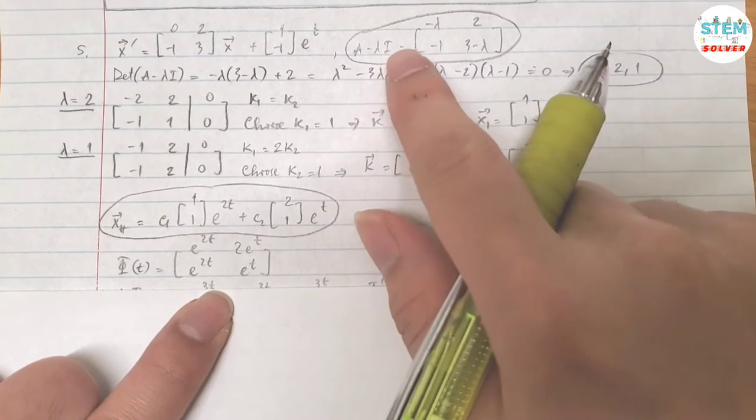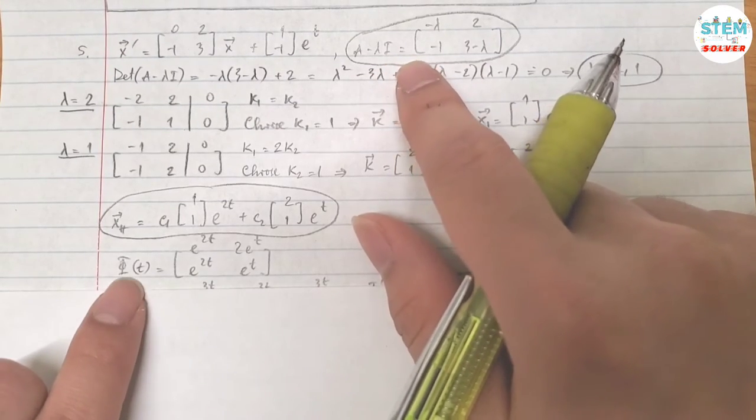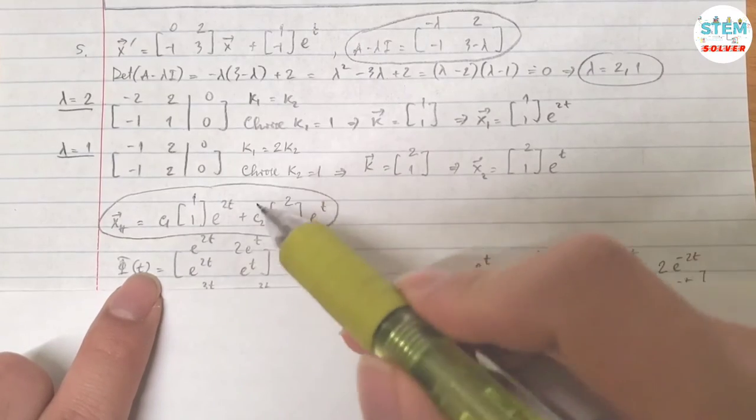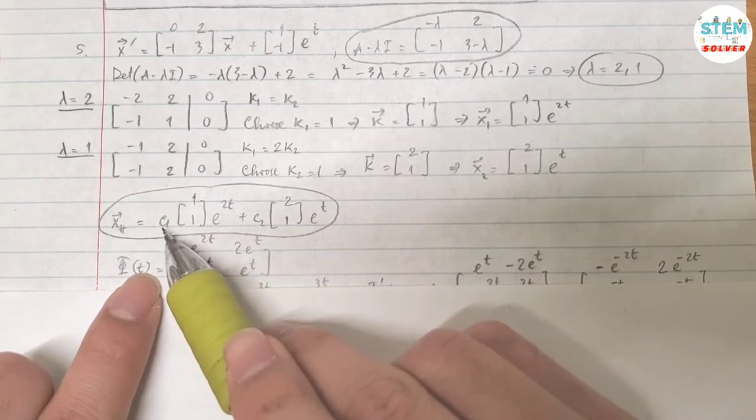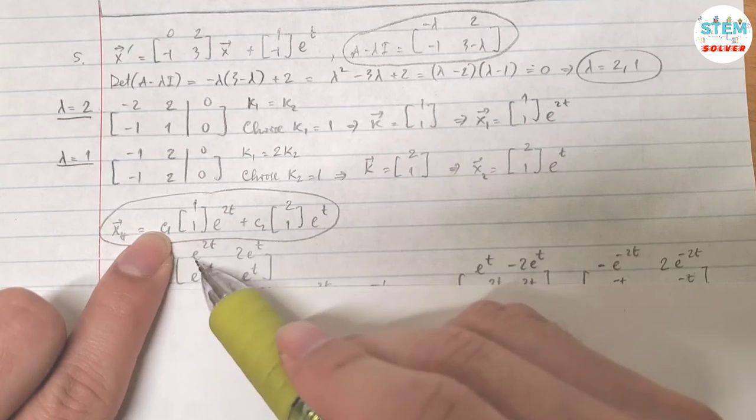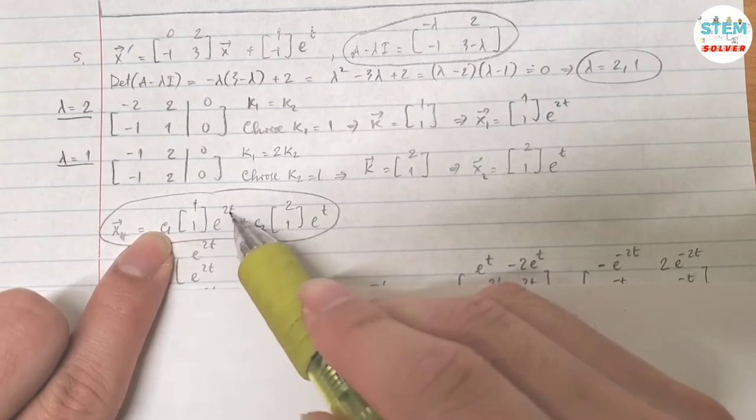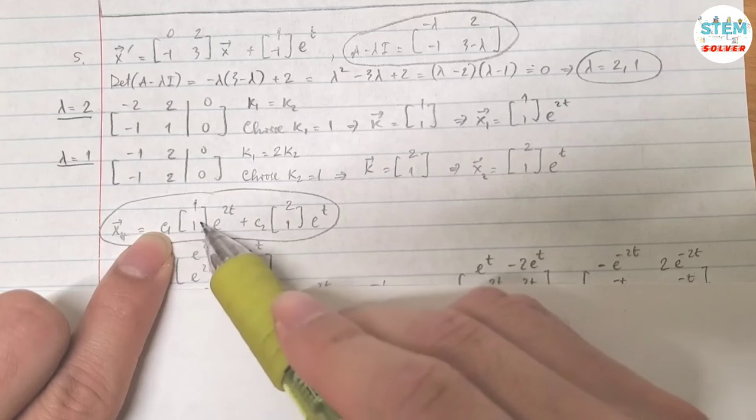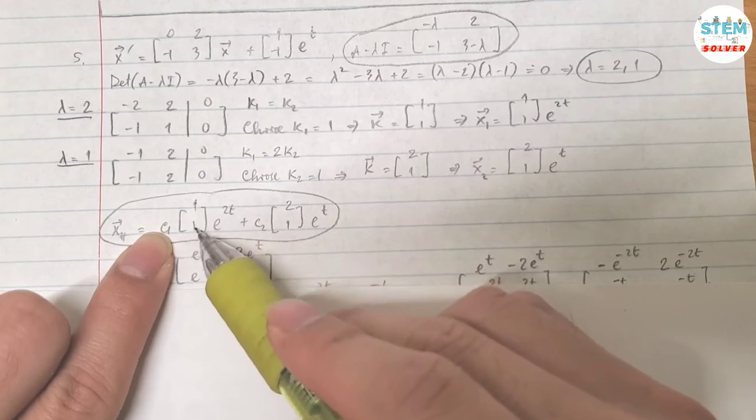Similarly like you have A-lambda-I, here you have phi of t. Ignore c1 and c2. Put the rest into a matrix. Don't forget to have e^(2t) included in your vector. Don't just take the numbers.